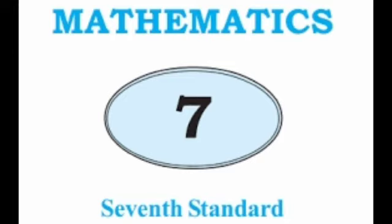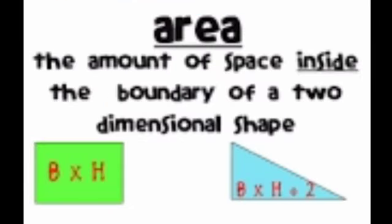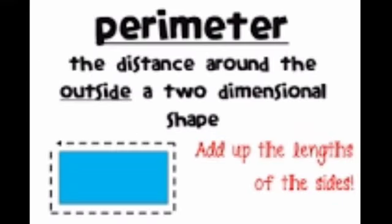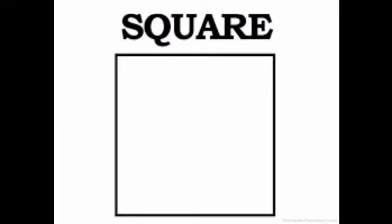Area is the amount of space inside the boundary of a two-dimensional shape. Perimeter is the distance around the outside of a two-dimensional shape — that means add up the length of the sides.